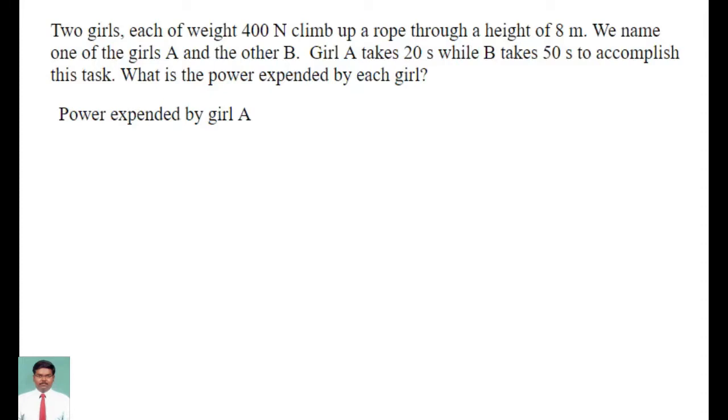Two girls, each of weight 400 Newton, climb up a rope to a height of 8 meters. We name one of the girls A and the other B. Girl A takes 20 seconds while B takes 50 seconds to accomplish this task. What is the power expended by each girl?